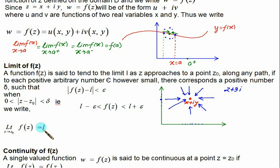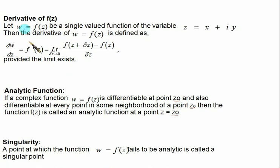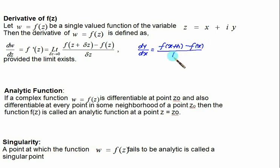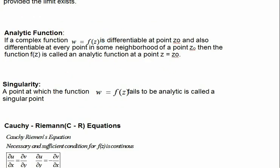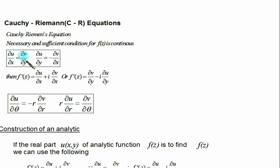If the function has a limit, then it is said to be continuous. If the function is continuous, we can compute the derivative. For example, dy/dx = [f(x+h) − f(x)] / h. Similarly, we can define the limit in the case of complex numbers — almost the same definition, where delta-z is the neighborhood. An analytic function is one that is differentiable at a point and also differentiable in the neighborhood of that point. To check analyticity, we simply apply the Cauchy-Riemann equations.